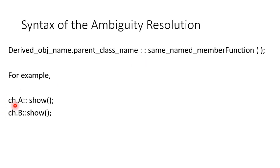For example, ch is the object, A is the superclass. ch.A::show() uses the scope resolution operator and the show method from superclass A. Similarly, ch.B::show() calls the show method from class B.